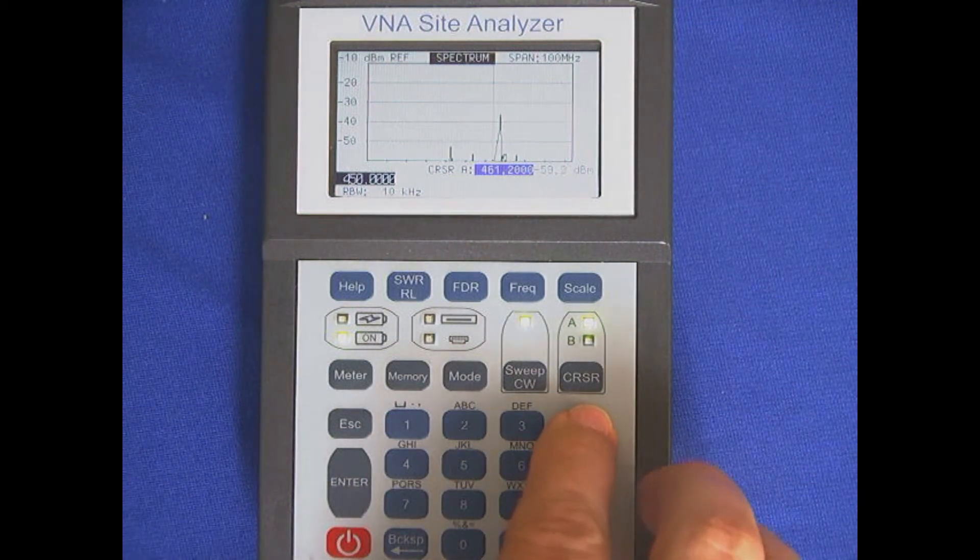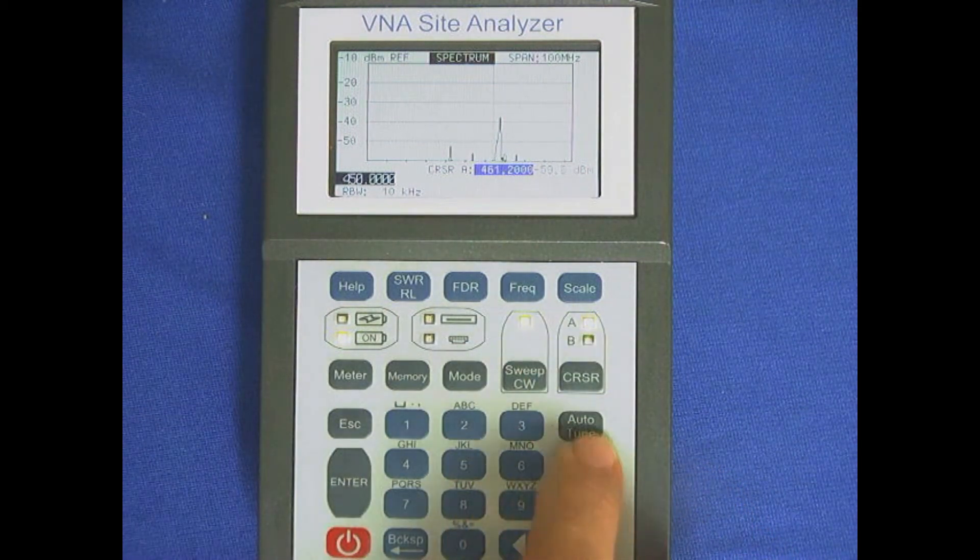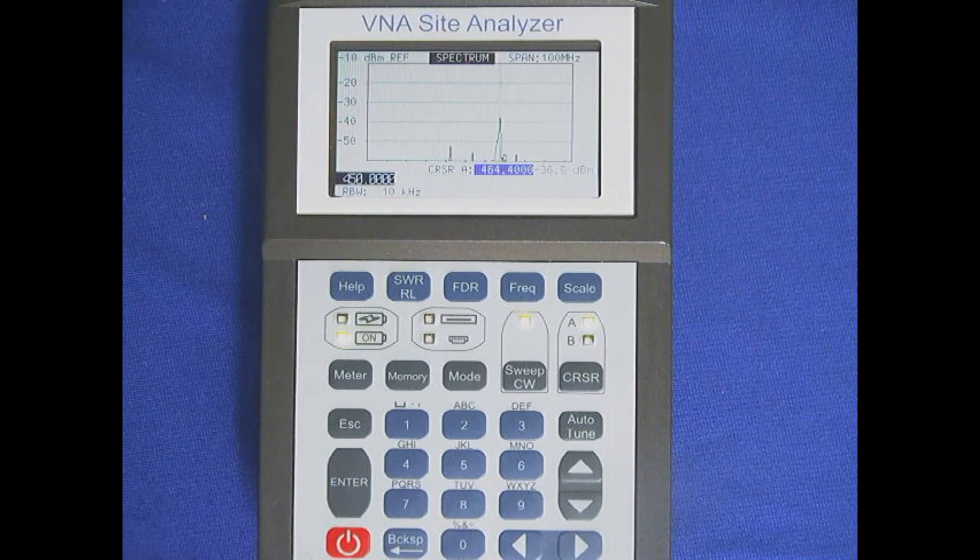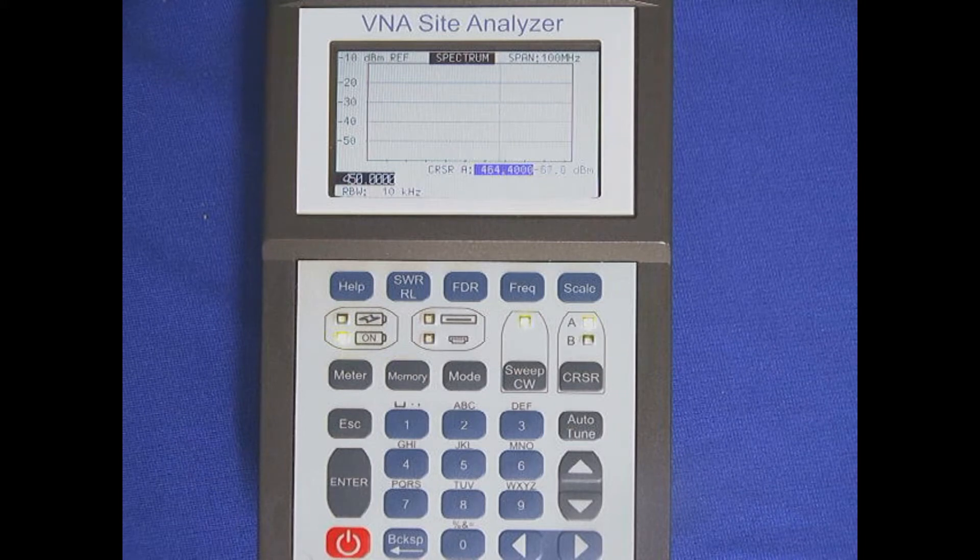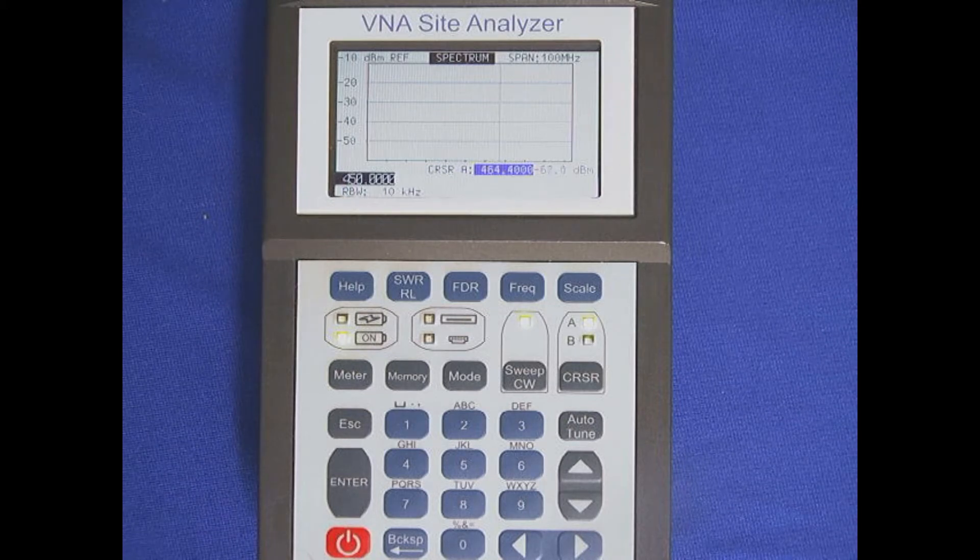Now we have cursor A turned on. You can hit Auto-Tune and it'll take us to the highest signal level. So it's shown to be 464,400. So now we know it's in the 464 range, but remember we only have 250 dots. So it's not going to be completely accurate at that wide of a spread on the display.